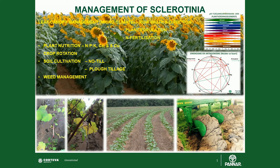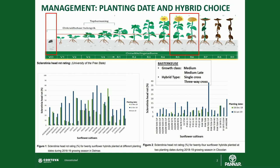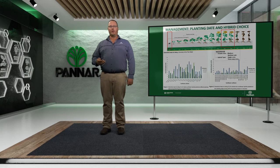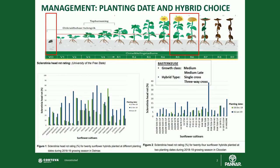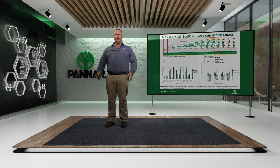Weed management is also very important. Broadleaf weeds on field boundaries and in runoff water areas need to be controlled to help prevent disease spread. Planting date, used specifically to alter the flowering date, is one of the best management tools available to mitigate the risk of Sclerotinia. By using different planting dates and different hybrid maturity lengths, you can spread sunflower flowering over a longer period, reducing the risk of Sclerotinia coinciding with a specific flowering window.